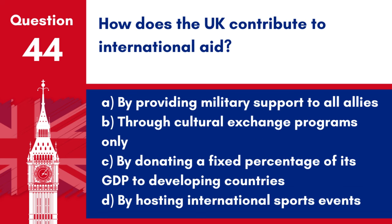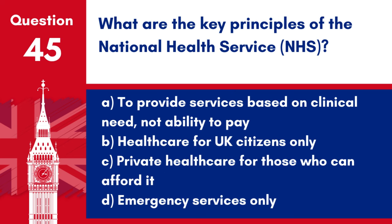Question 44: How does the UK contribute to international aid? a. By providing military support to all allies. b. Through cultural exchange programs only. c. By donating a fixed percentage of its GDP to developing countries. d. By hosting international sports events. Answer: c. By donating a fixed percentage of its GDP to developing countries. The UK commits to international aid by providing financial assistance, humanitarian aid and development support to countries in need, aiming to improve global welfare.